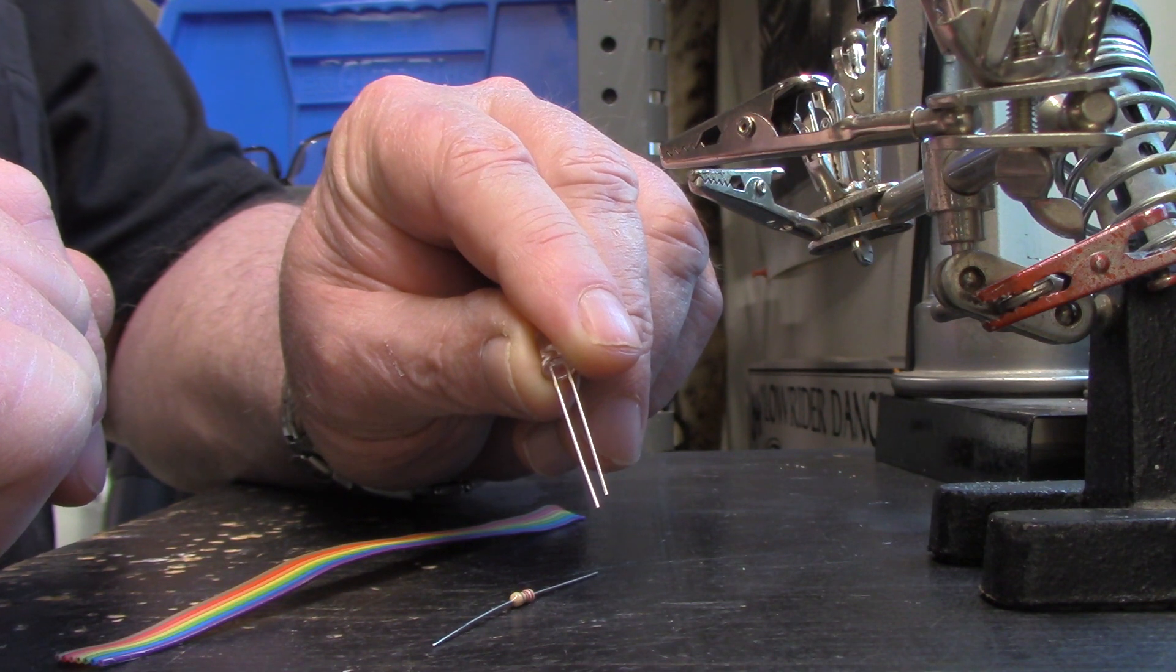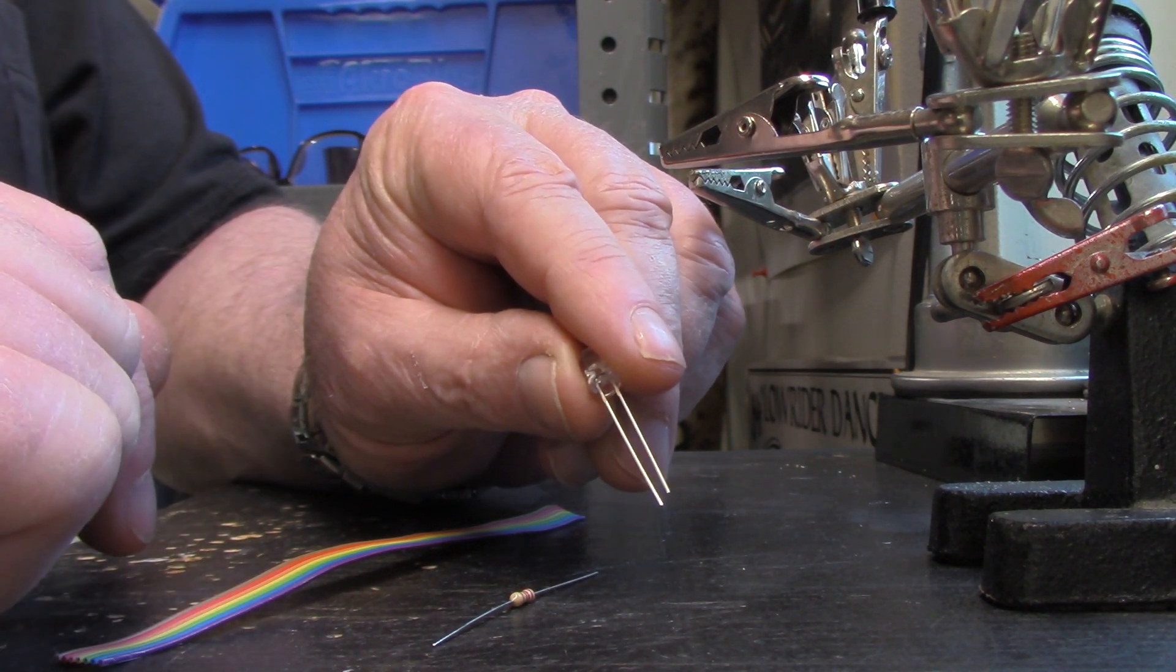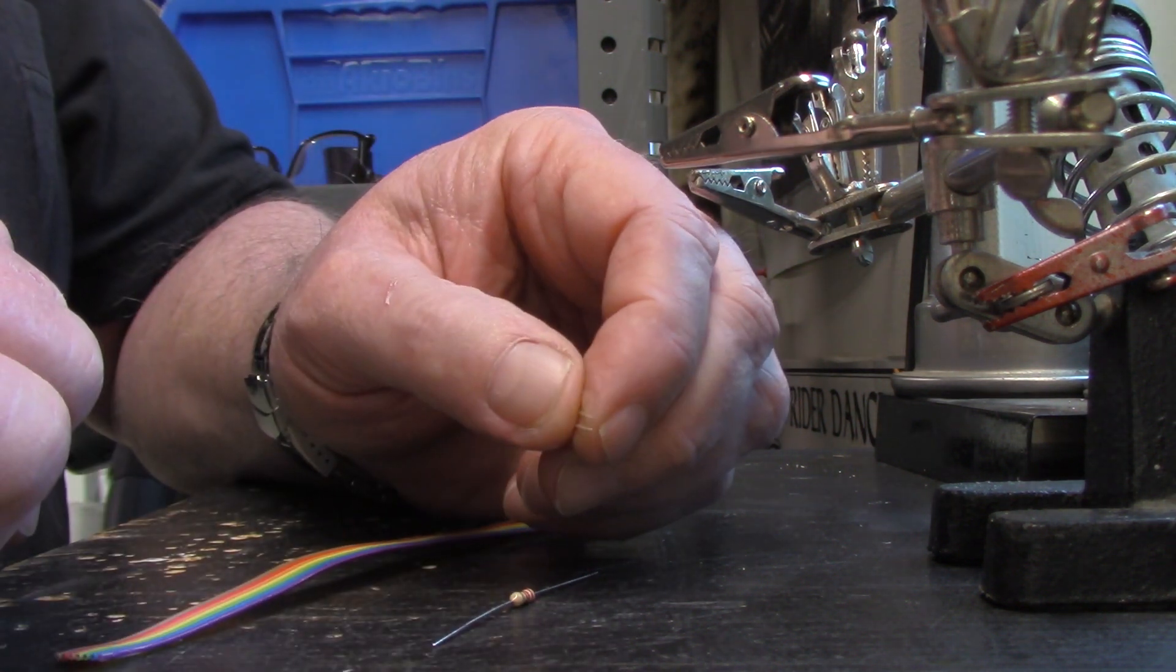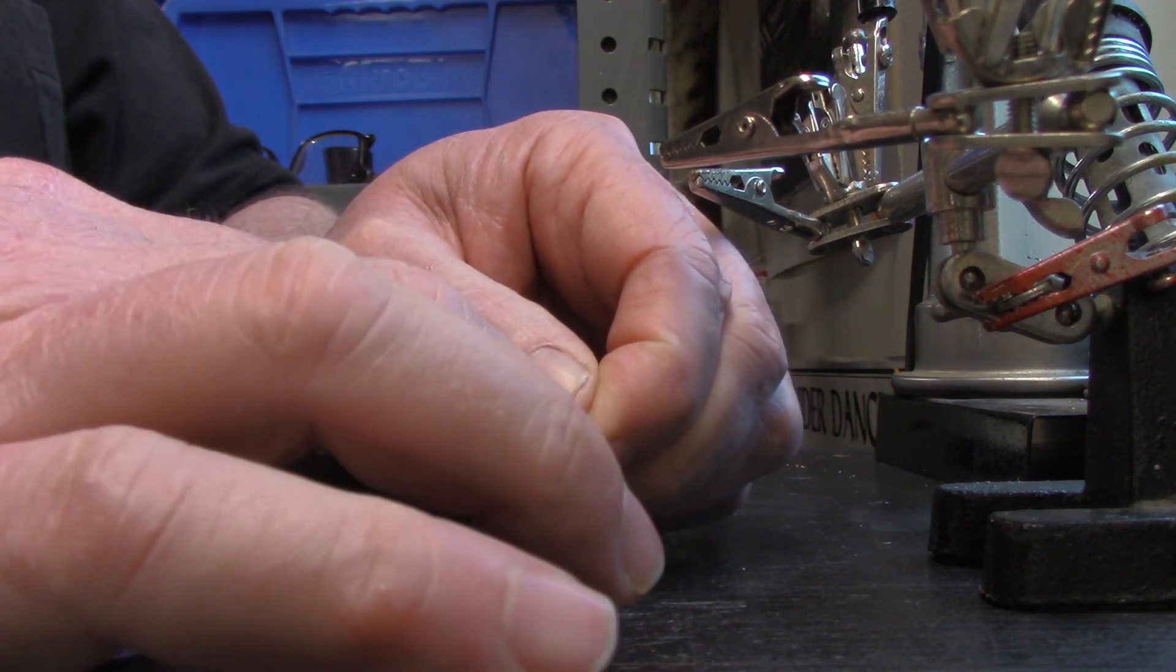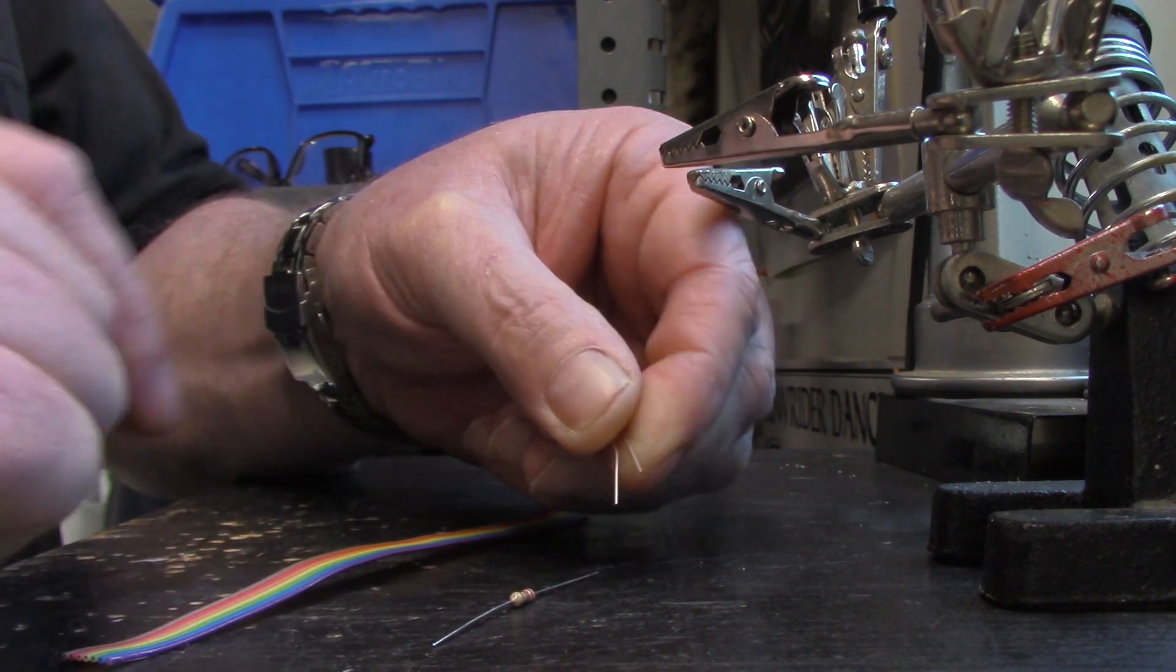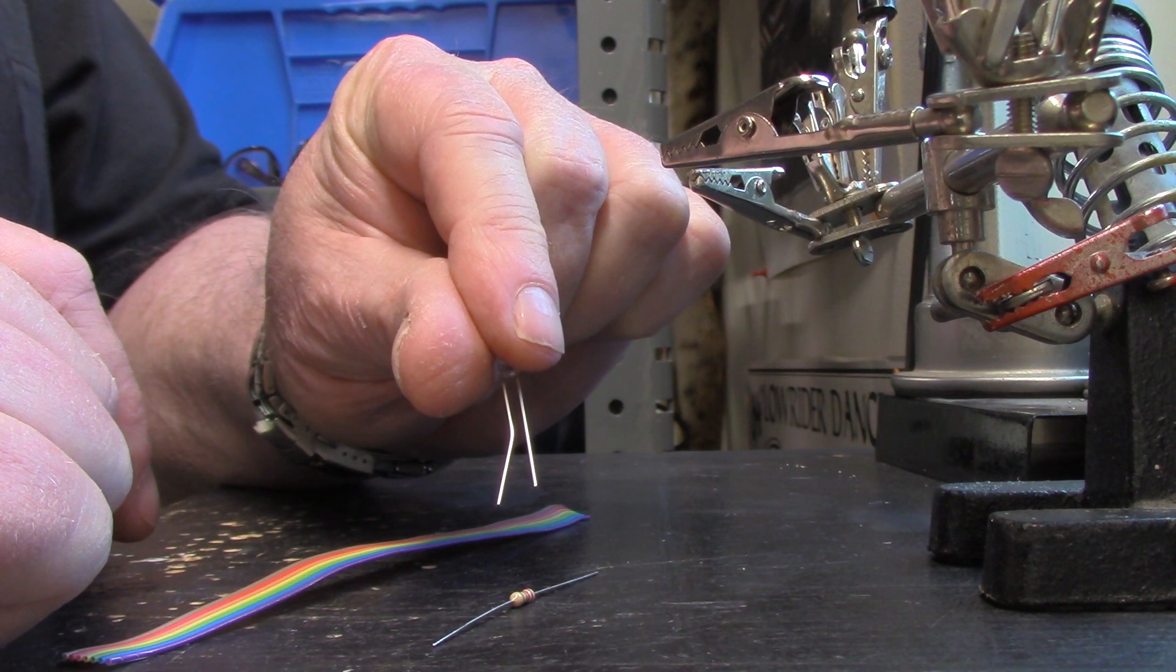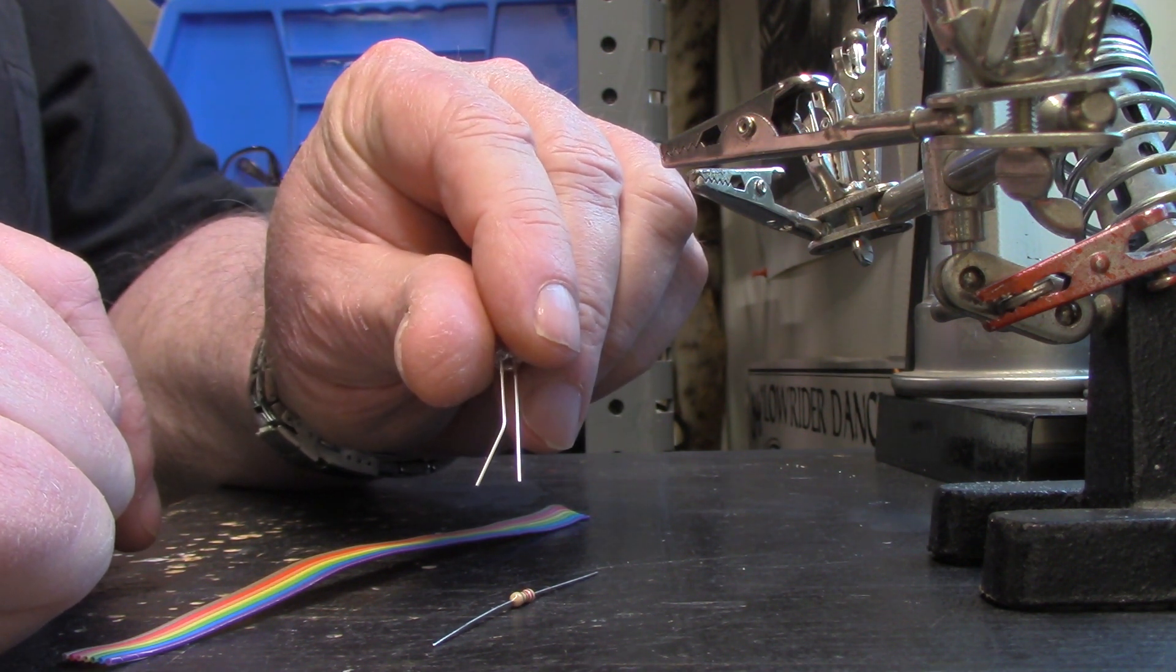So what I always do before I get ready to wire an LED is the first thing I do is take this LED and bend one side. I grab it right about midway and I bend over this positive side to look like that.